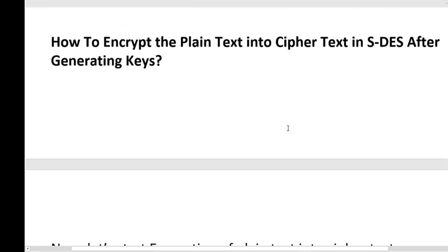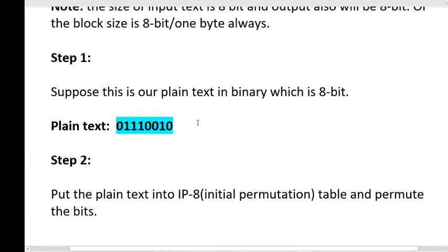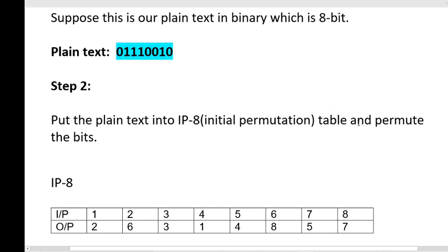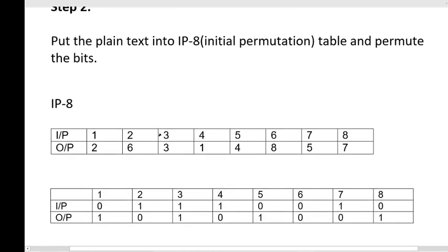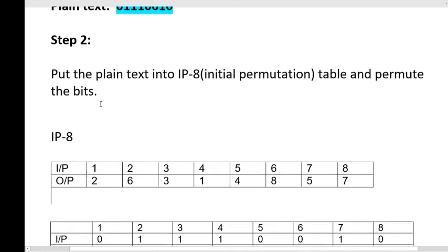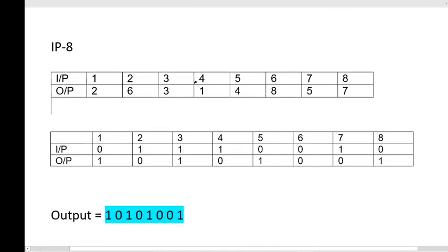Coming to the concrete encryption example: the plain text I am considering is 00111001 (or equivalently, 0 double-1 double-1 zero zero one zero). In the second step I put the plain text into the IP table and permute the bits — IP stands for Initial Permutation. In the previous video I explained the tables used in the SDS algorithm. If the input is 1 then the output is 2, meaning it takes the value at the second position of the input.